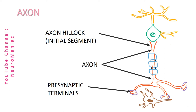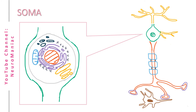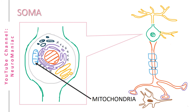Next, we'll move on to the soma, otherwise known as the cell body. It's the metabolic powerhouse of the neuronal cell. Typically it contains a nucleus, endoplasmic reticulum, mitochondria, the Golgi apparatus, and ribosomes. Now that we've covered the critical parts of a neuron, let's move on to the myelin sheath.